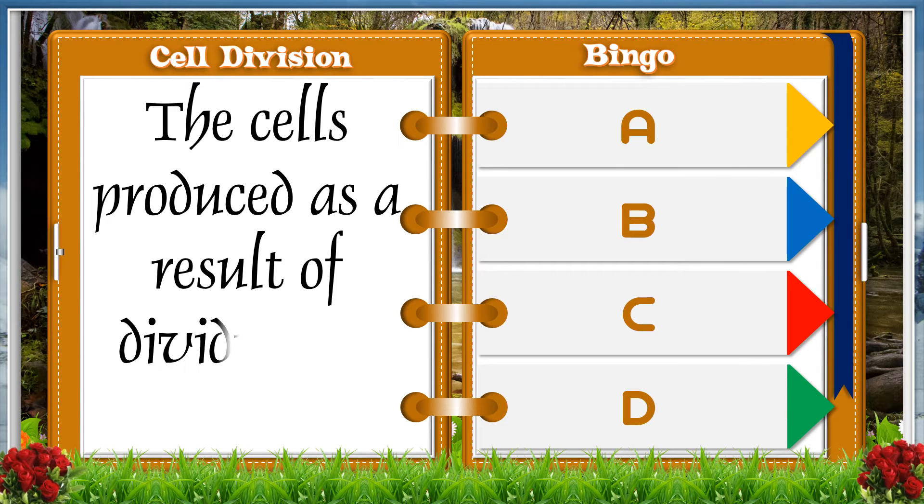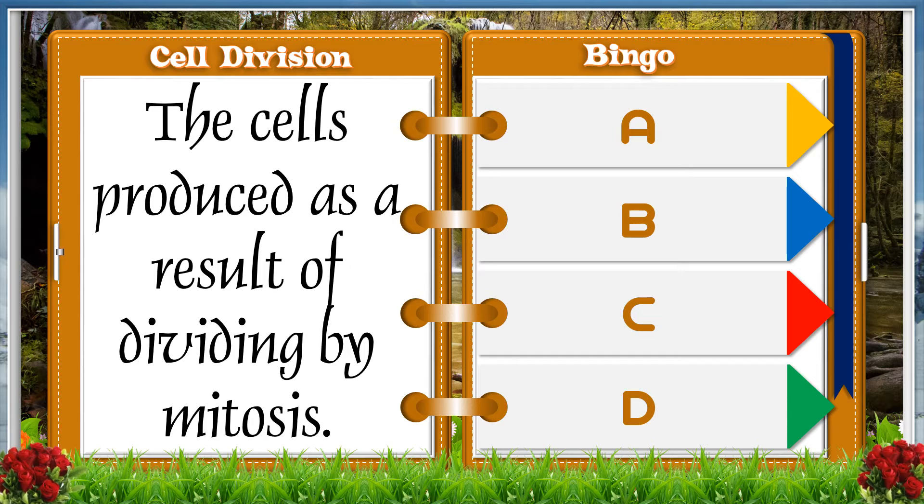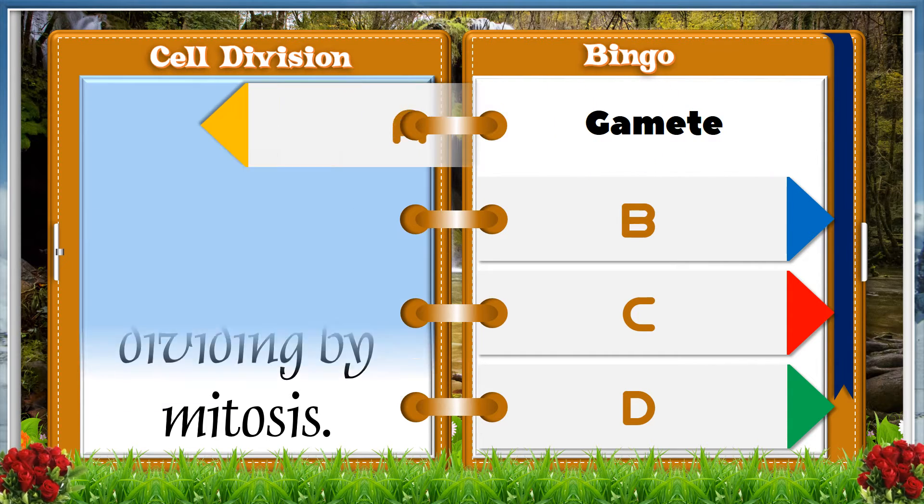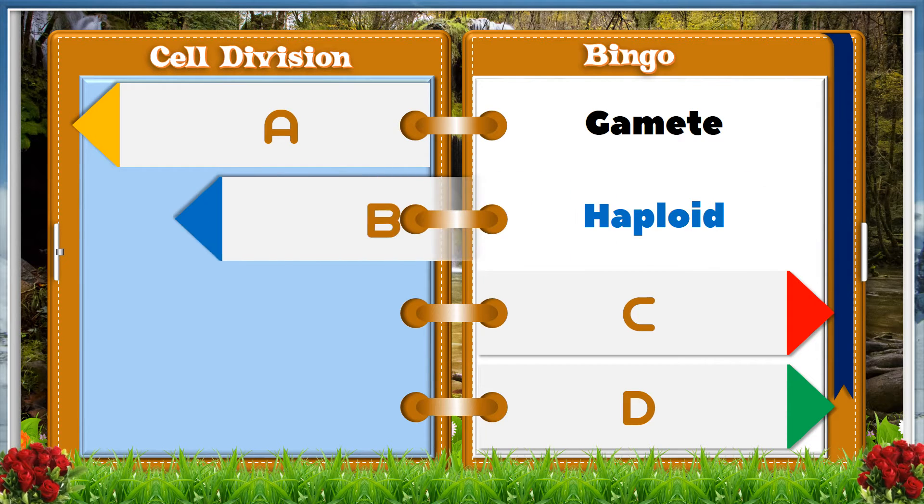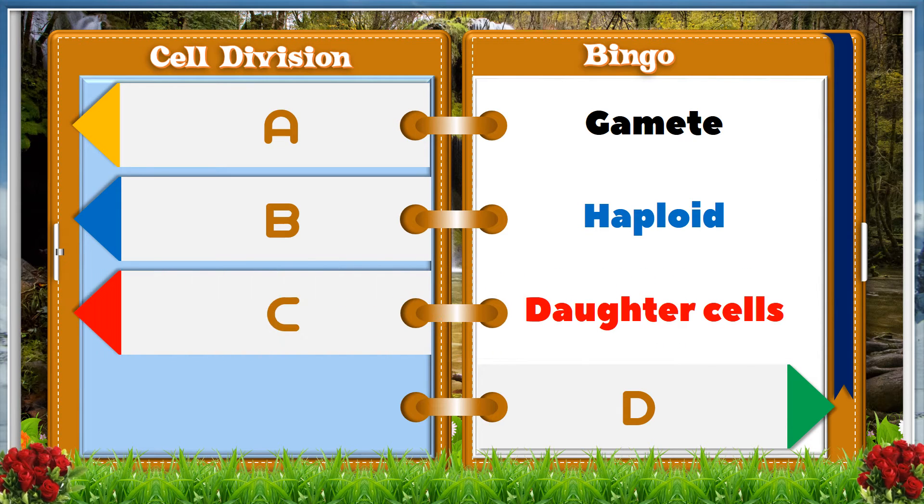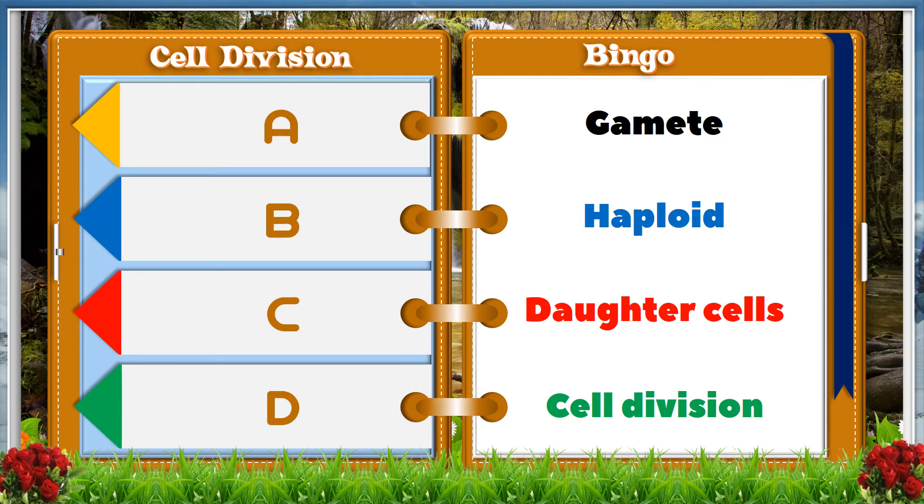The cells produced as a result of dividing by mitosis: A gamete, B haploid, C daughter cells, D cell division.